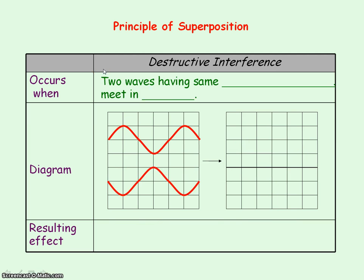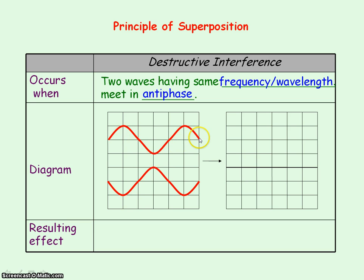Another special case of superposition is known as destructive interference. This is at least two waves of the same type having the same frequency or wavelength, but they meet in antiphase — they meet with a half a cycle difference. So when one wave is at its crest, the other wave will be at its trough and vice versa.